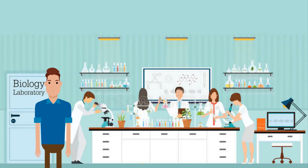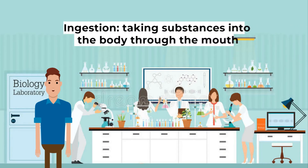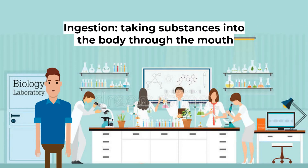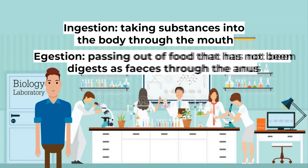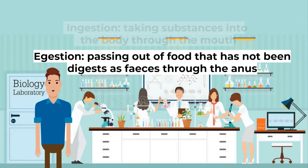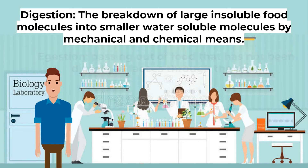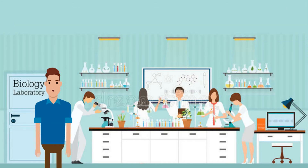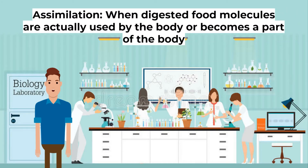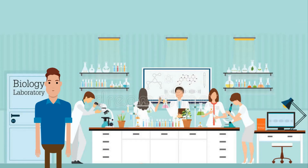You need to know the definitions of the following words. Ingestion: taking substances into the body through the mouth. Egestion: passing out of food that has not been digested as feces through the anus. Digestion: the breakdown of large insoluble food molecules into smaller water-soluble molecules by mechanical and chemical means. Assimilation: when digested food molecules such as glucose and amino acids are actually used by the body or become a part of the body — for example, glucose being used for respiration, or amino acids being built into muscles.